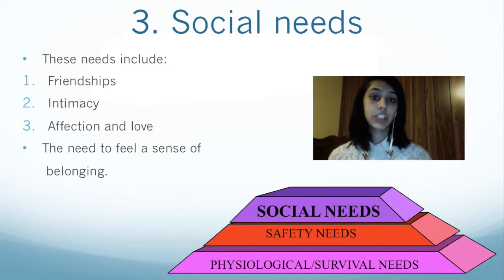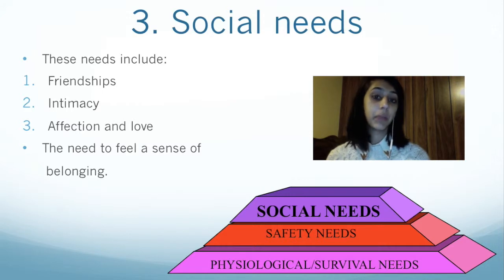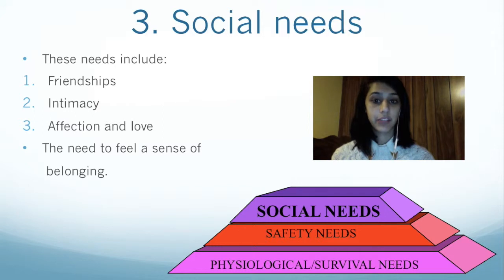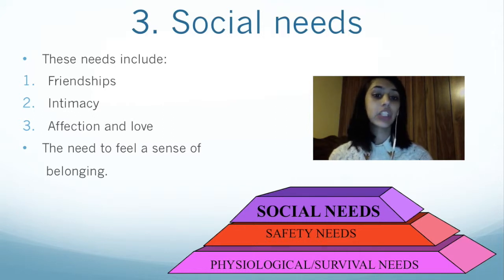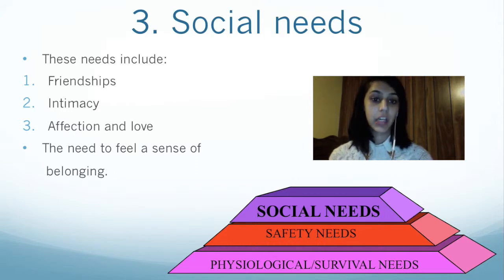The third stage of Meslow's hierarchy of needs is the social need. Also known as love and belonging, we tend to desire social acceptance, friendships, and love. In order to meet these needs, we engage in social activities with others and have romantic and familial attachments. We also work in cooperative learning groups and participate in classes, clubs, and communities.